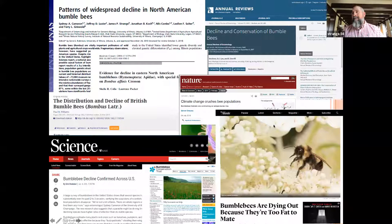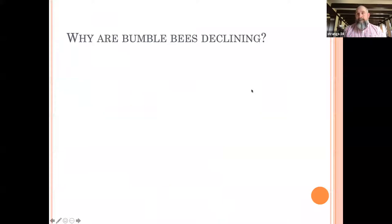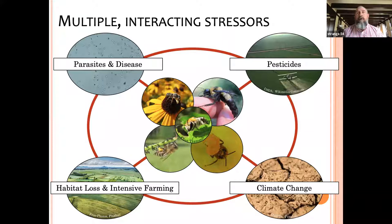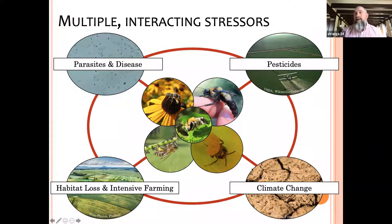Why are bumblebees declining? There are multiple interactions and stressors affecting all kinds of different bees: pathogens and diseases, pesticides, habitat loss, intensive farming, fragmentation, and of course climate issues. Climate is causing not only host plants to change but also altering the temperatures in which these bees inhabit, affecting many different species — not just bumblebees.